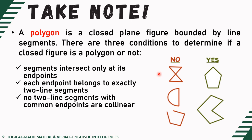Apart from that, we need to satisfy the three conditions. It says segments intersect only at its end points. As you can see, this one is not considered a polygon because this particular segment intersects at the middle point or middle portion of the given segment. It should only intersect at its end point, so it does not satisfy the first condition.